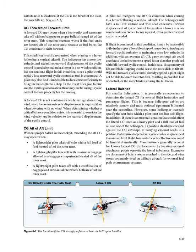When facing upwind, even greater forward cyclic is needed. If flight is continued in this condition, it may be impossible to fly in the upper allowable airspeed range due to inadequate forward cyclic authority to maintain a nose low attitude. In addition, with an extreme aft CG, gusty or rough air could accelerate the helicopter to a speed faster than that produced with full forward cyclic control.